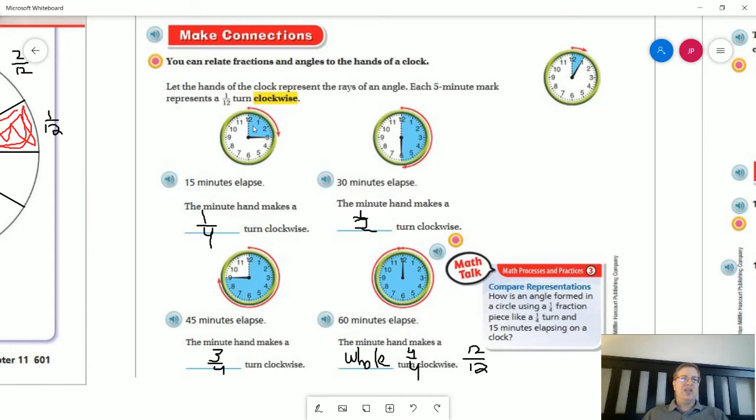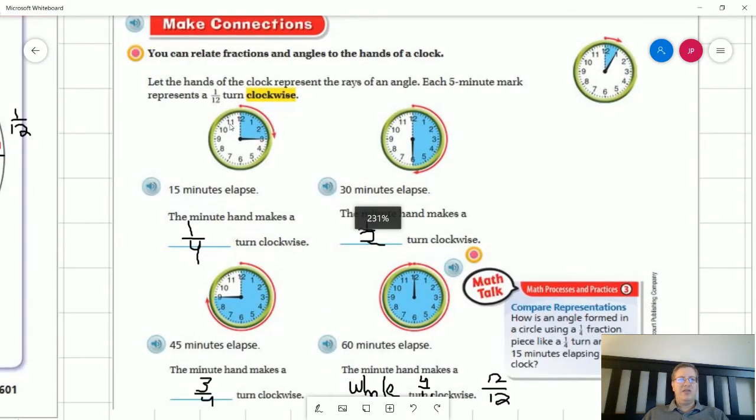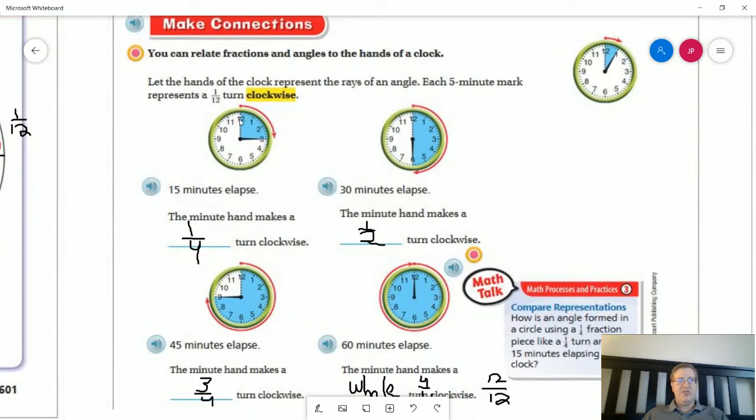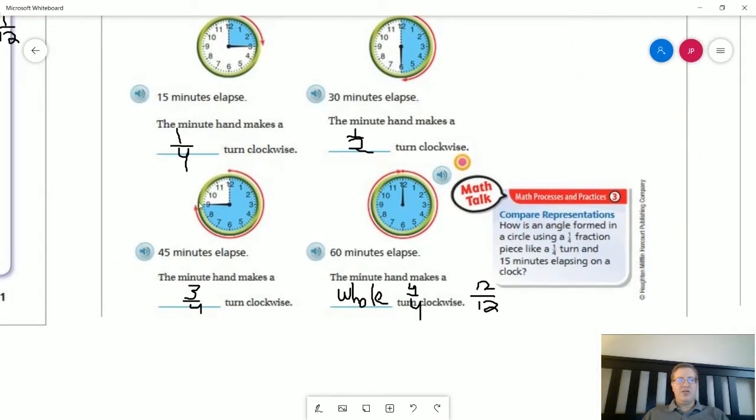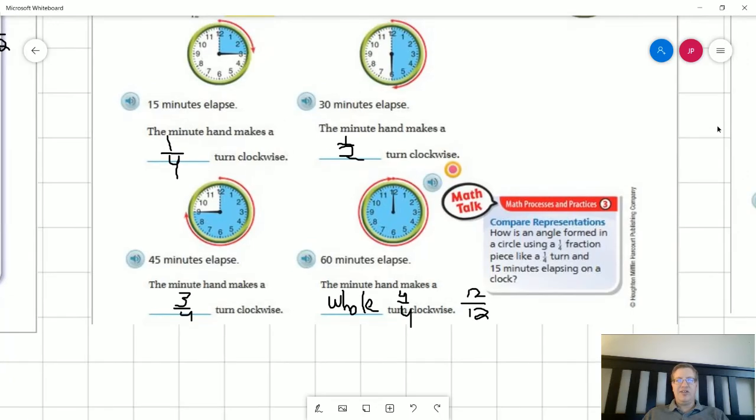And so to start with we're going to say what the amount of the turn is. So we are making a one quarter turn clockwise. The second one we're making a half turn clockwise. The third one we're making a three quarter turn clockwise. And the last one we are making a whole turn clockwise. So representing that as a fraction we could do four parts over four to relate it back to these. We could even say it's 12 over 12 because there are 12 individual points that we think of when we are telling time.